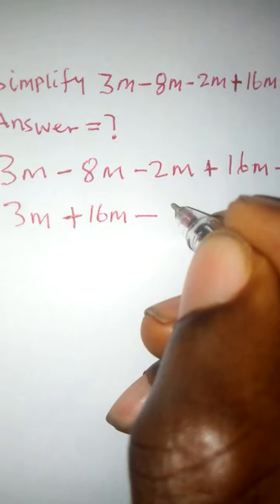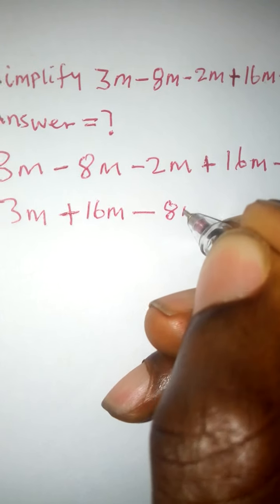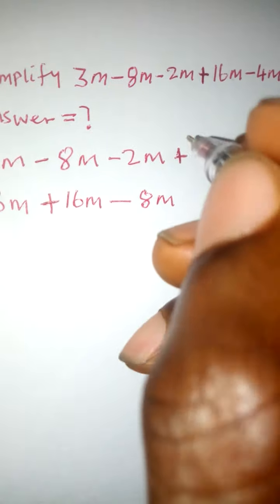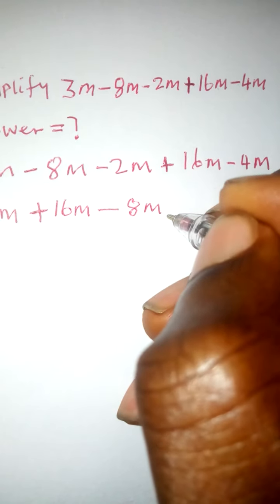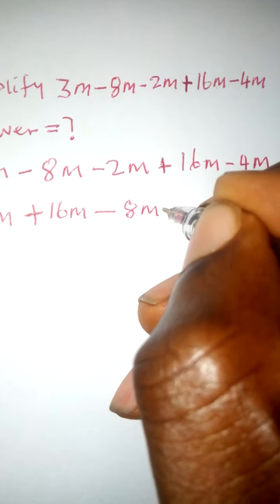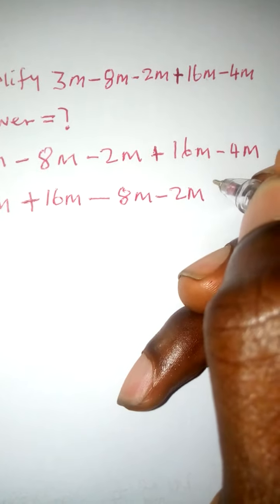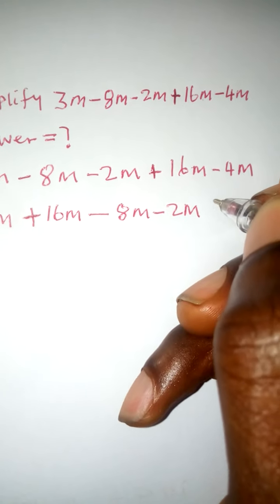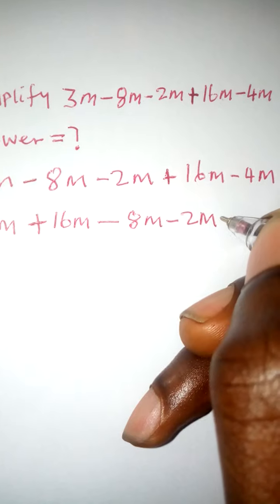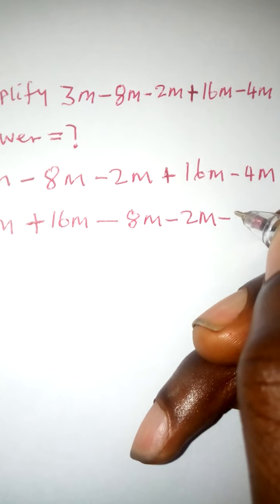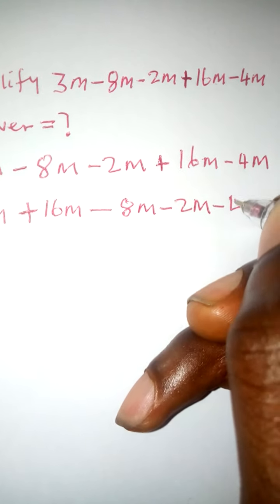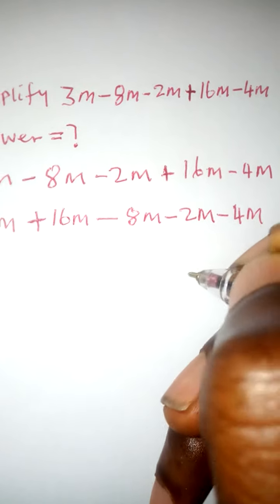Minus 8m. Then I will have minus 2m. Then I will bring down minus 4m. Sorry, excuse me. Minus 8m. Minus 8m. Go.